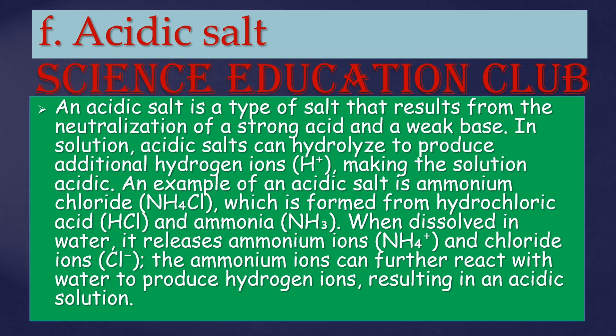Acidic salt: an acidic salt is a type of salt that results from the neutralization of a strong acid and a weak base. In solution, acidic salts can hydrolyze to produce additional hydrogen ions, making the solution acidic. An example of an acidic salt is ammonium chloride, which is formed from hydrochloric acid and ammonia. When dissolved in water, it releases ammonium ions and chloride ions; the ammonium ions can further react with water to produce hydrogen ions, resulting in an acidic solution.